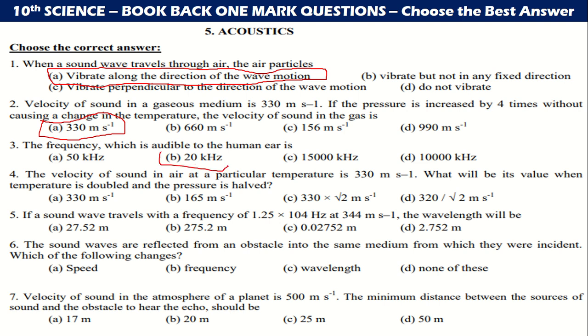The frequency which is audible to the human ear is 20 to 20 kilohertz. The velocity of sound in air at a particular temperature is 330 m/s. What will be its value when temperature is doubled? 330 into root 2. If a sound wave travels with a frequency 1.25 × 10⁴ hertz at 344 m/s, then your answer will be 0.2752 m. The sound waves are reflected from an obstacle into same medium from which they are incident.